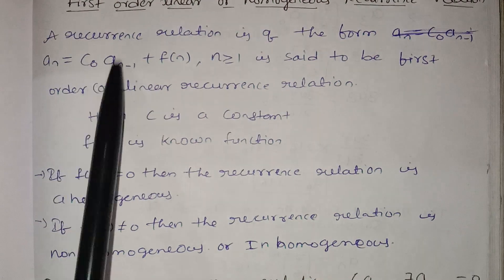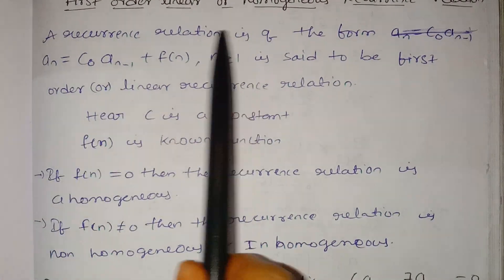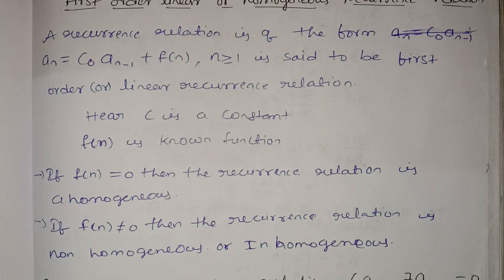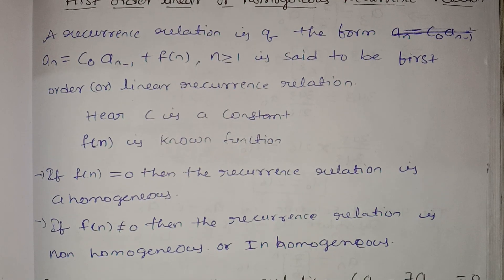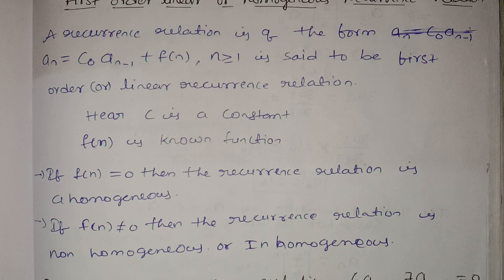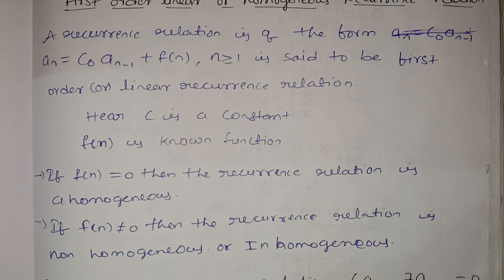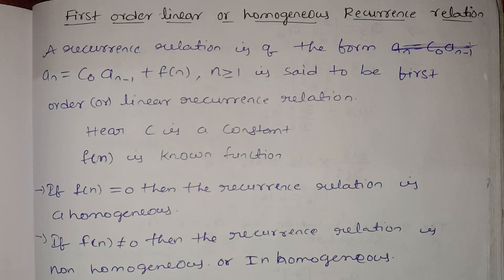In this form, the recurrence relation with n ≥ 1 is called a first-order linear recurrence relation. If f(n) = 0, we also call it a first-order homogeneous recurrence relation.